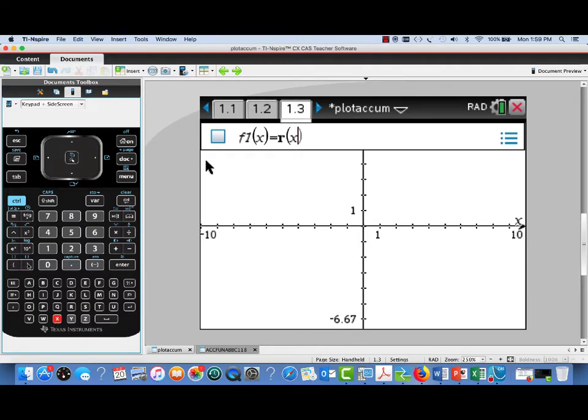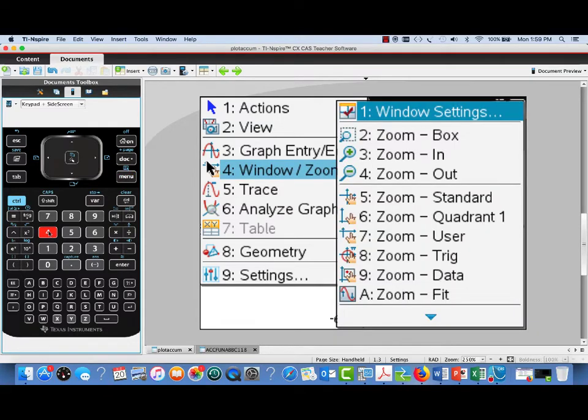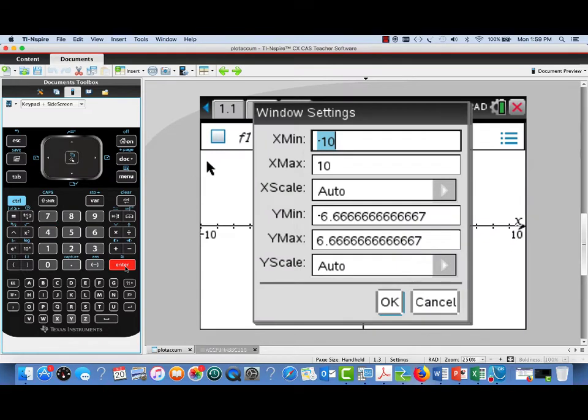The domain of this function for which it is non-zero is a pretty large interval from 0 to 300. So I'm opening up the window settings, and the X min is -10, I'll leave that alone, but let's set the X max to 360.